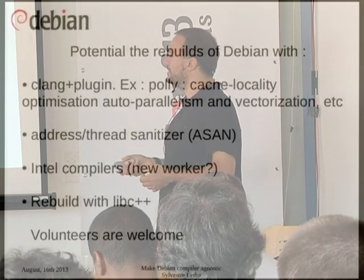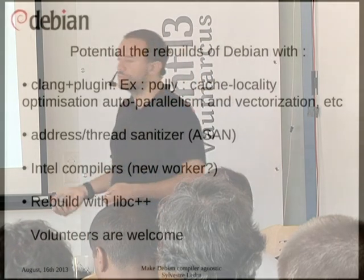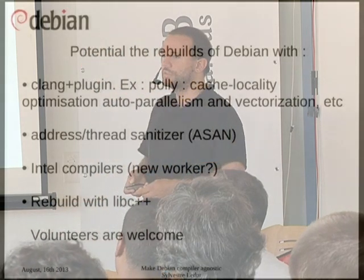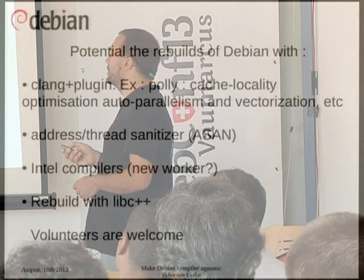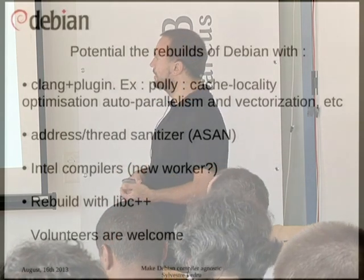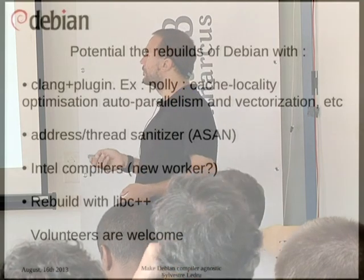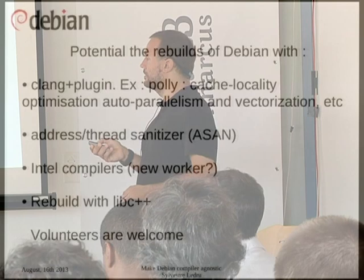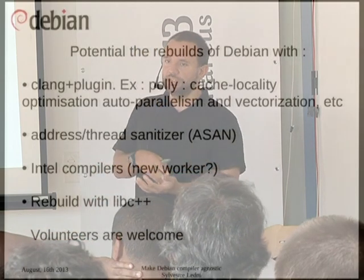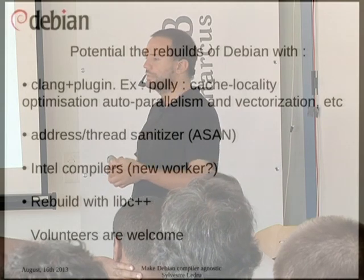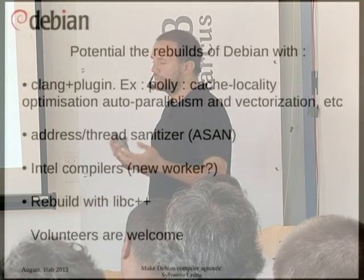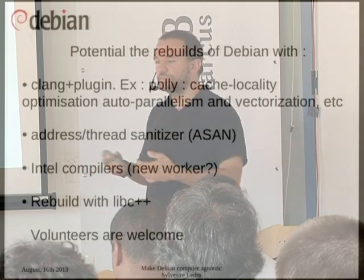There are also other things we might try during the rebuild — one is not something I'll do in the next few months, maybe in one or two years. We could use the Polly library, which might give huge performance improvements especially on numerical computing software. We could also use address and thread sanitizers — basically, when you compile a binary, it includes static code that detects memory leaks and race conditions during threading. They claim it's eight or nine times faster than Valgrind, so it's a nice piece of code.